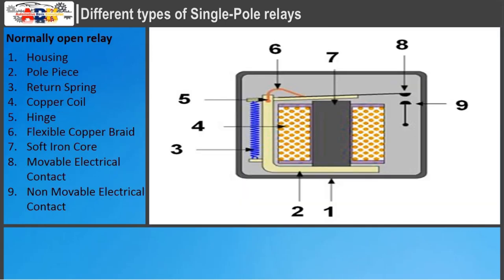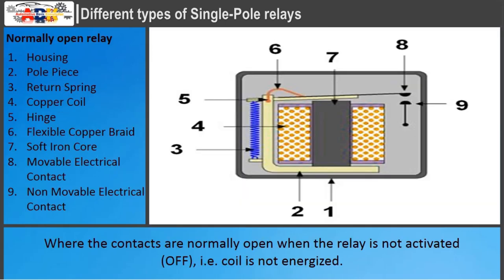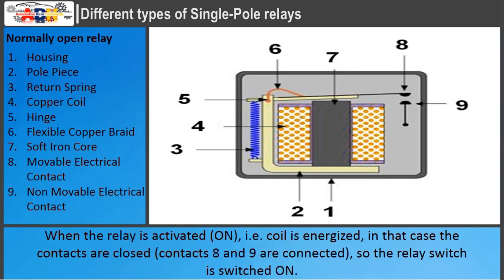Normally open relay: the contacts are normally open when the relay is not activated and the coil is not energized. When the relay is activated and the coil is energized, the contacts are closed. Contacts 8 and 9 are connected, so the relay switch is switched on.